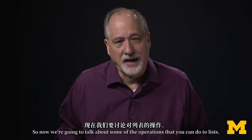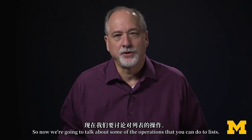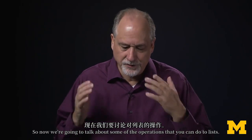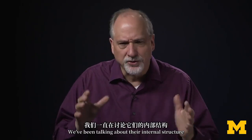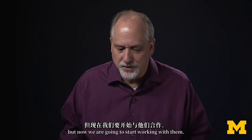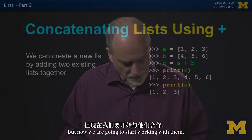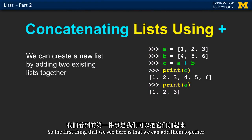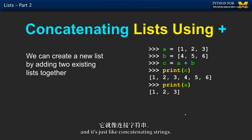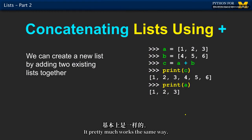So now we're going to talk about some of the operations that you can do to lists. We've talked about their internal structure, but now we're going to start working with them. The first thing we see is that we can add them together, just like concatenating strings. We concatenate lists together and it pretty much works the same way.